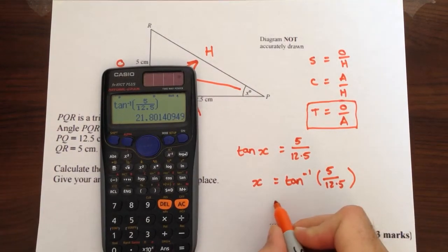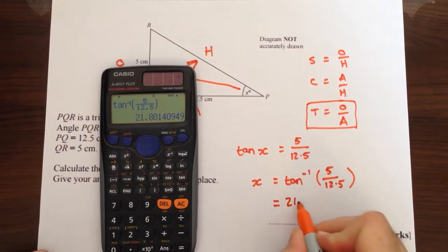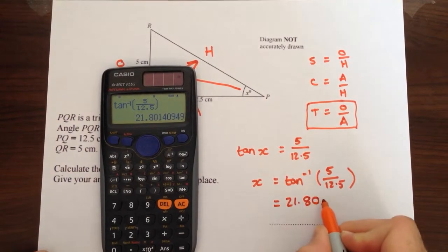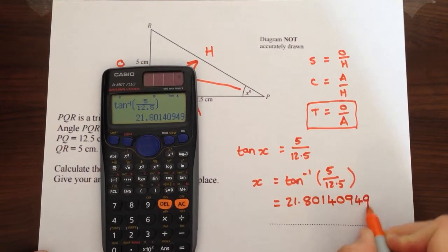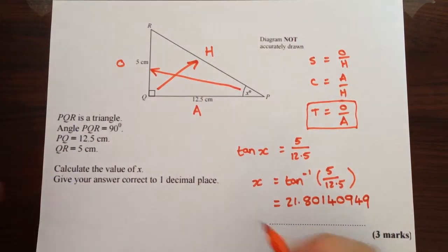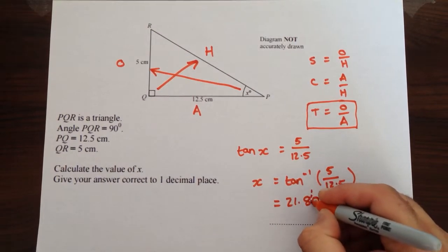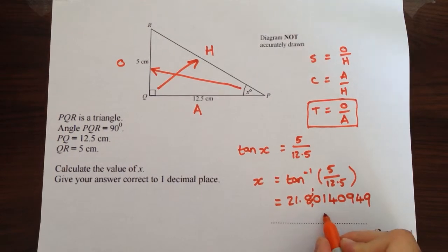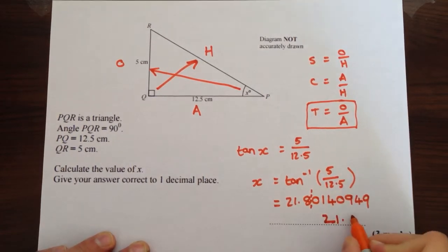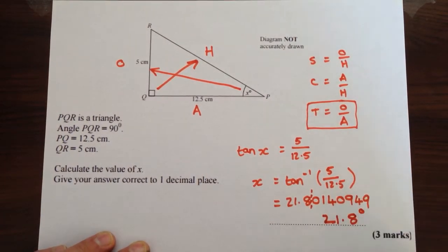And that gives us an answer of 21.80140949. The question says give your answer correct to one decimal place. So we're going to cut that off there. Check the number after the cutoff. That zero won't affect that eight. So our final answer is 21.8 degrees.